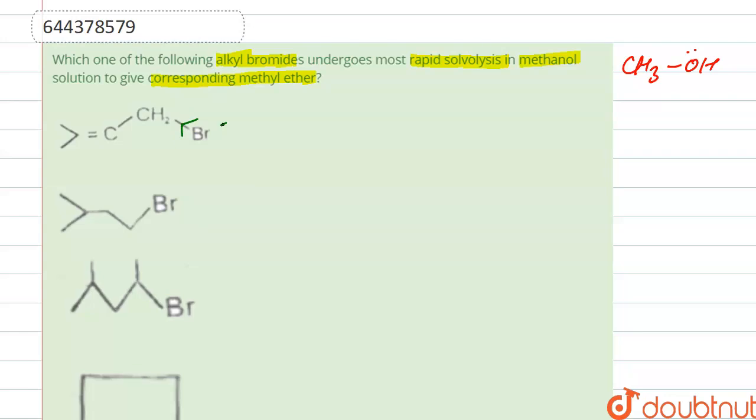So here this shows -I effect, and here due to I effect, a partially positive charge occurred at this carbon. And here this C double bond is also sp2 hybridization, and due to this it withdraws electron from this carbon.